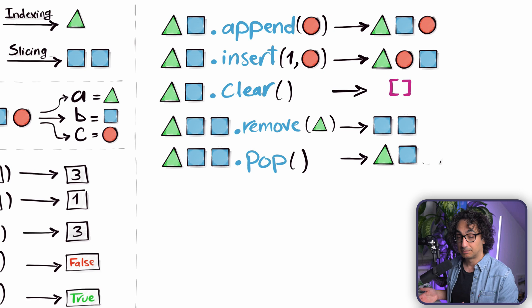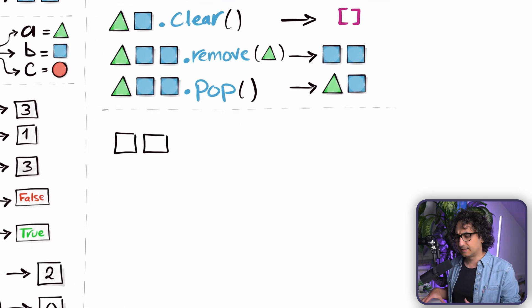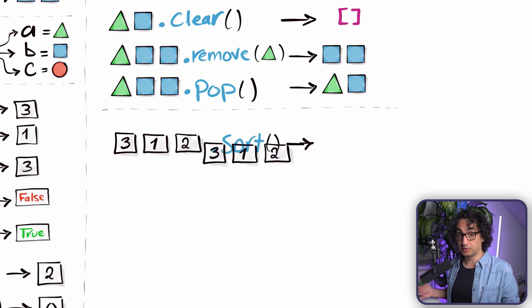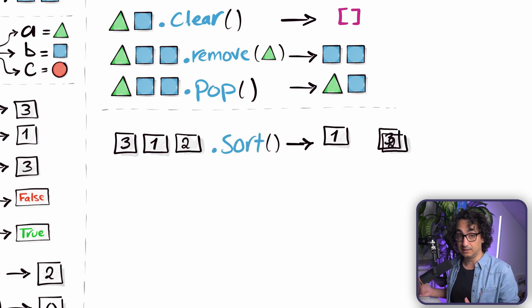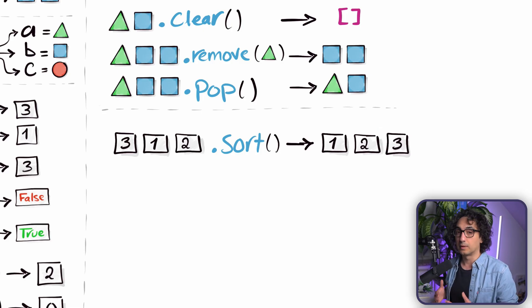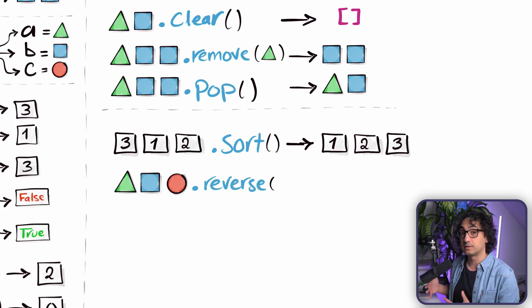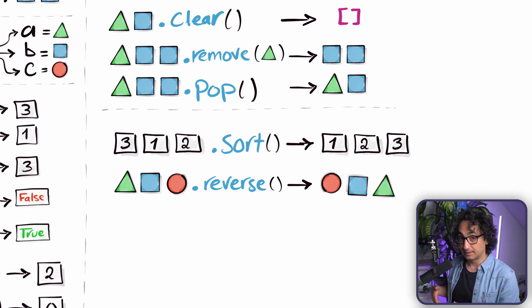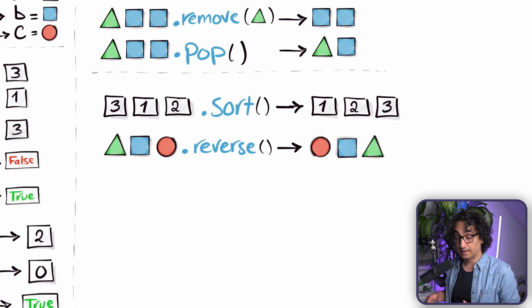Or you can go and use the method pop in order to remove by position number. By default, it can remove the last item, but of course you can specify exactly which position should be removed. Now, if your list is chaotic and messy, we can sort it using the method sort if you want to sort everything alphabetically or numerically from lowest to the highest, or you can use the method reverse if you want to flip the list around so the first item is going to be the last one and the last item is going to be the first one.